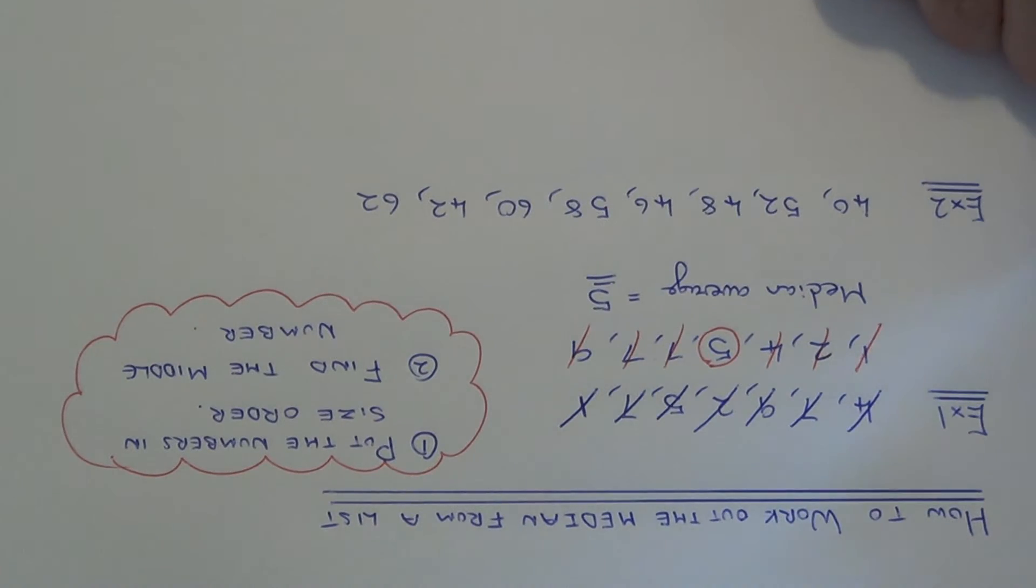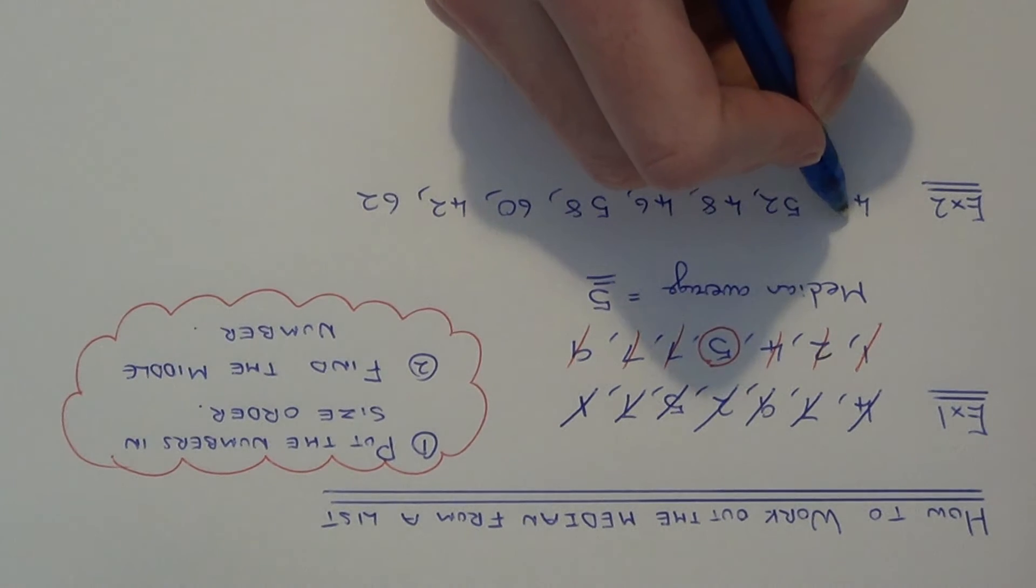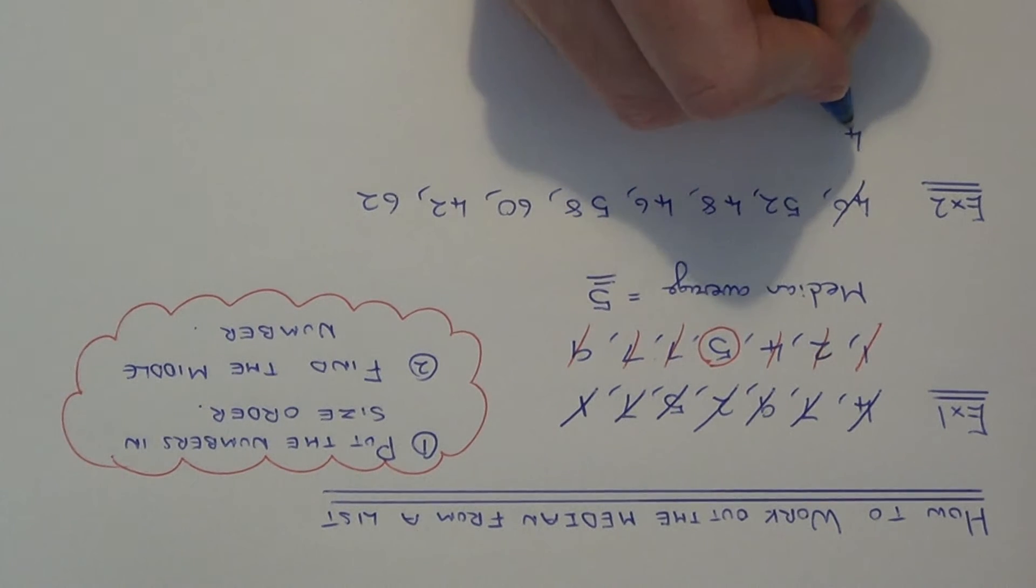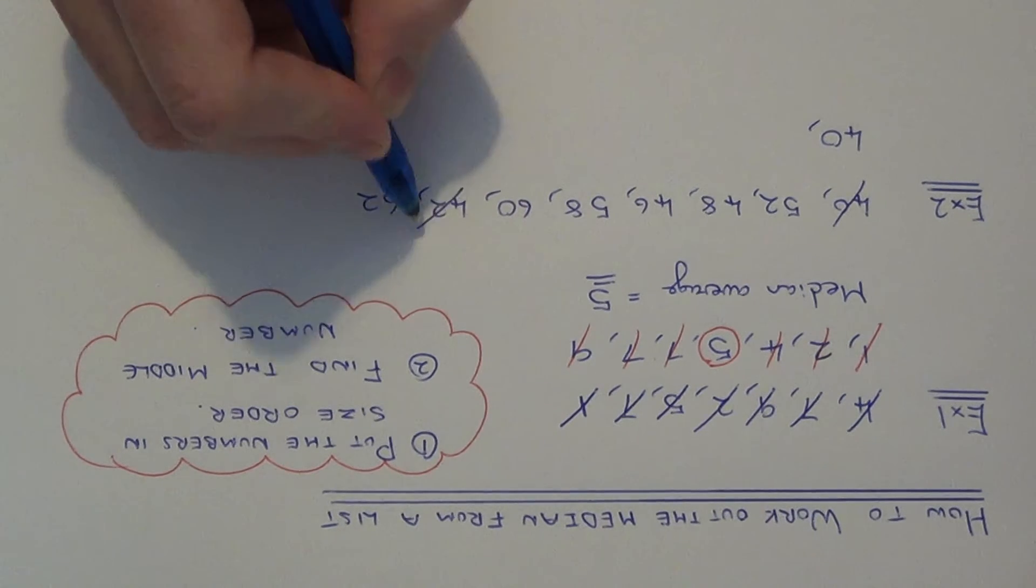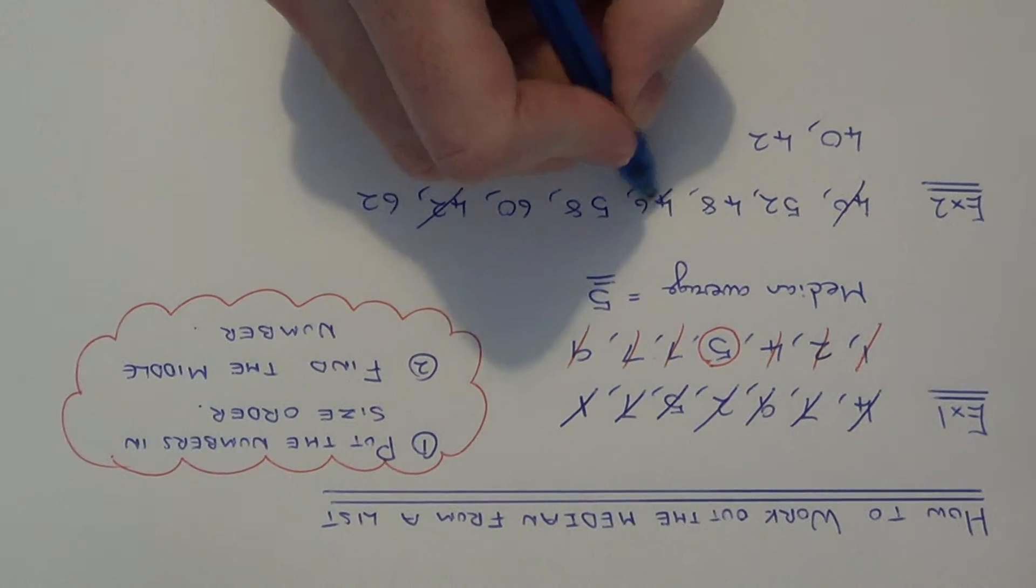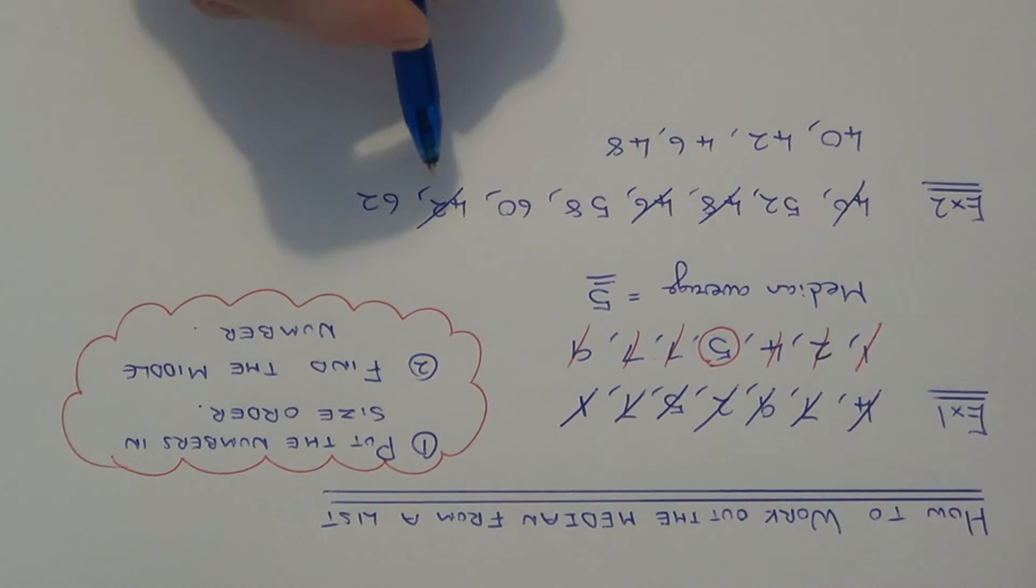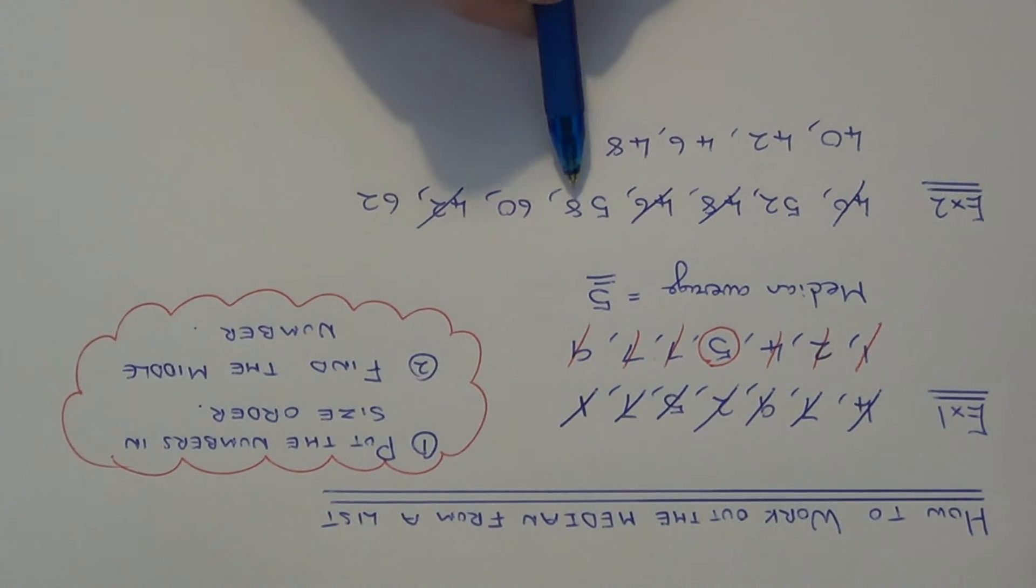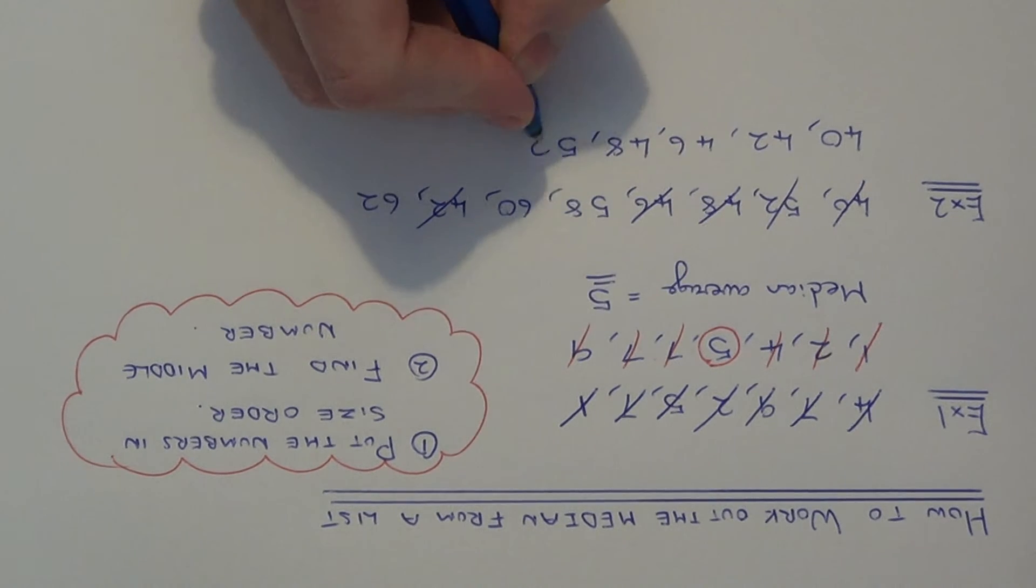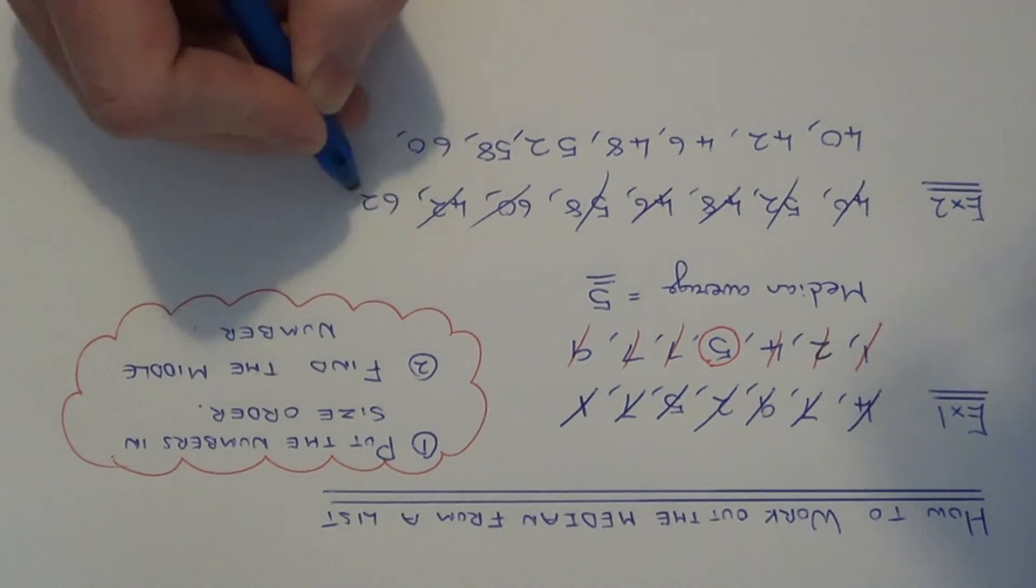So let's move on to example two. Again the first thing we need to do is put these numbers into size order. So our smallest one is 40. The next number is 42. Then we've got 46 and 48. The next smallest one is 52. Then we've got 58. Then we've got 60 and our final one is 62.